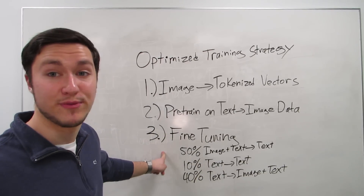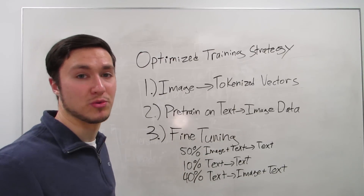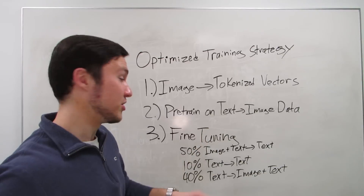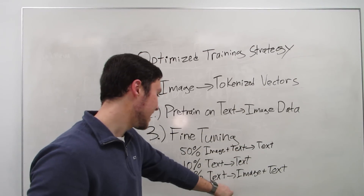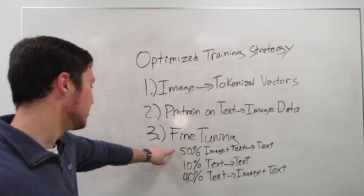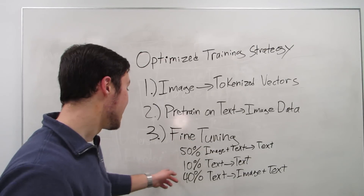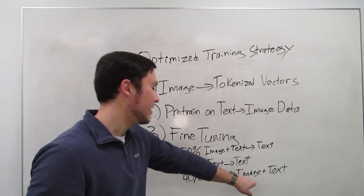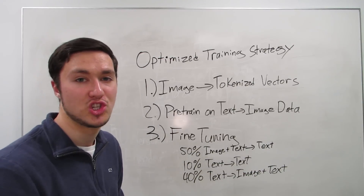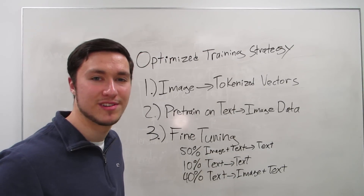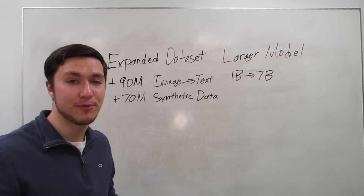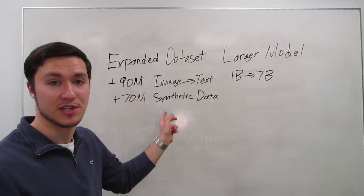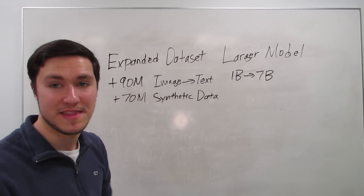Then they did supervised fine-tuning with labeled data and correct responses. DeepSeek split their data into: 50% image-plus-text to text for multimodal understanding, 10% text-to-text data so the model can reason and output correct responses, and 40% text-to-image-to-text for multimodal image generation. In addition to an optimized training strategy, they expanded their dataset to include 90 million more examples of image-to-text captioning data and 70 million more examples of synthetic data.